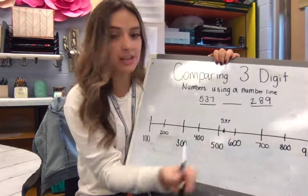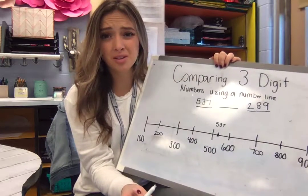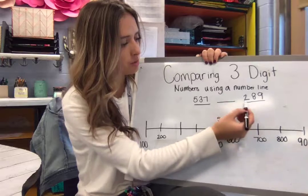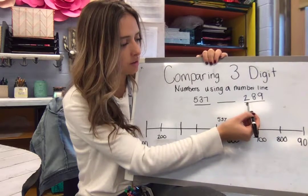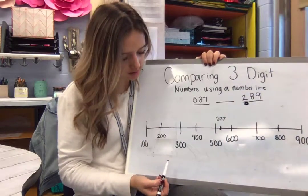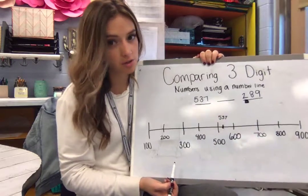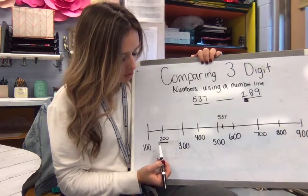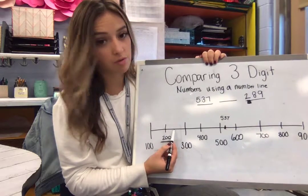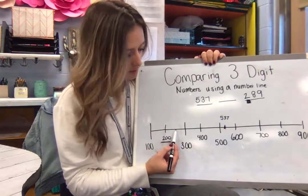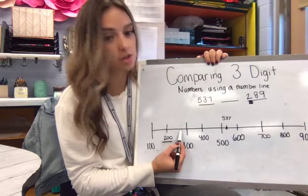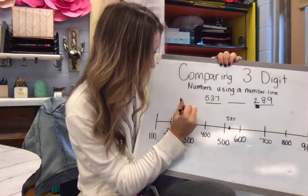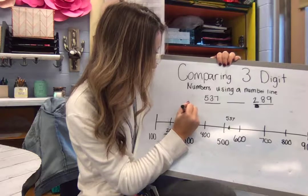Then I want to look at 289. That's pretty close to 300, but not quite there yet. So, let's look at the first place value. 200s. Where do we find 200s? Right here. 200. So, I know it's more than 250. So, it's going to be past the middle, a little bit closer to 300, just not there quite. So, I'm going to plot 289.